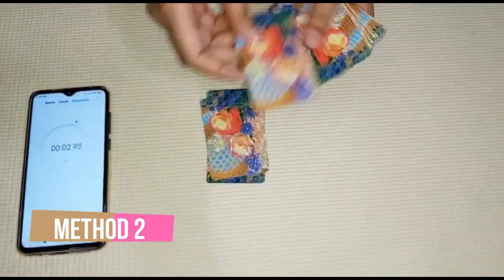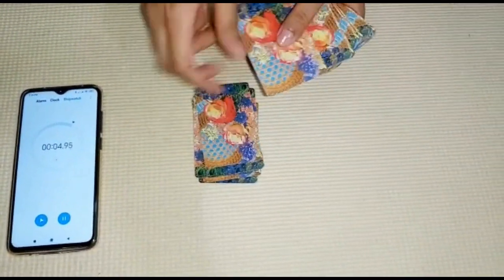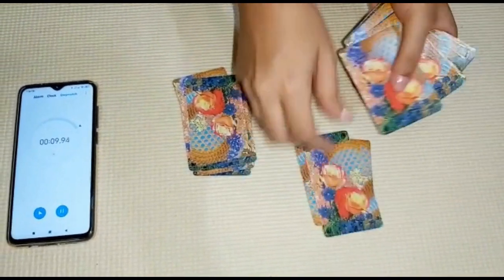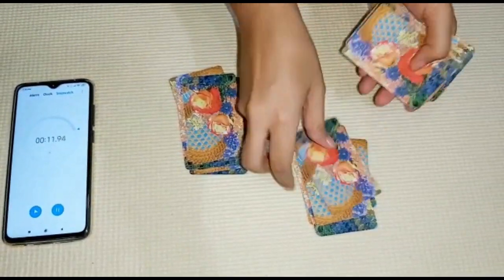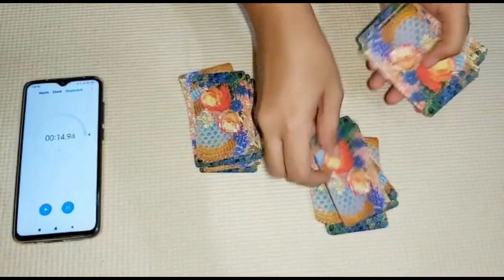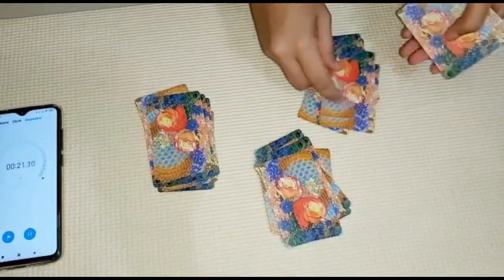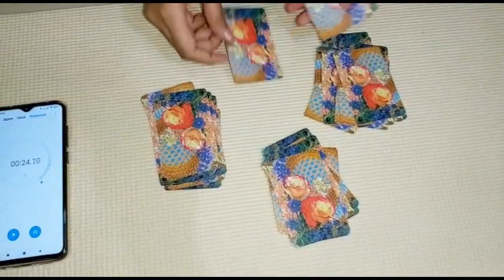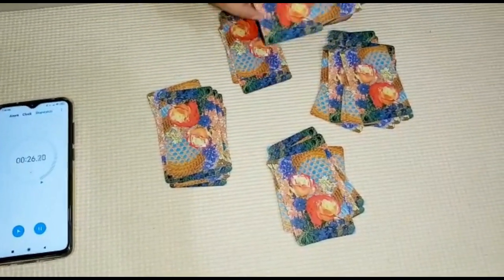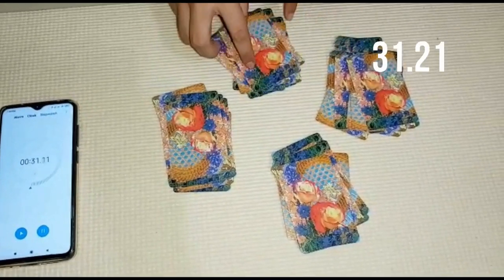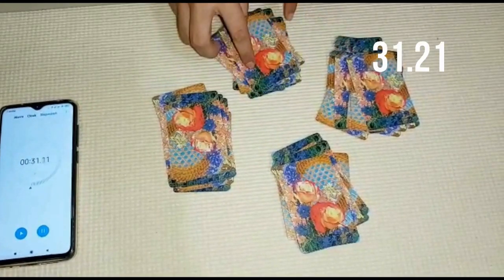This is Method 2, where we are distributing 13 cards at a time. We will collect the time required for Method 2. Similar to Method 1, five iterations are done for more reliable data. The recorded time for Method 2 is 31.21 seconds.